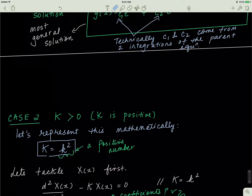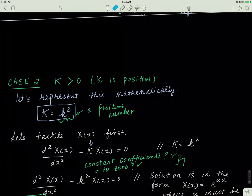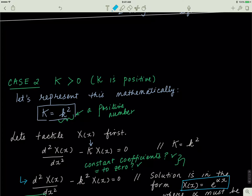I know that capital K is equal to k squared, so I go ahead and substitute that in place of K. Using a different color pen to make this more obvious — if I substitute k squared in place of K, I'm left with this form of the equation. Now ask yourself two questions: does this have constant coefficients? Yes. Is this equal to zero? Yes. So any equation meeting these two criteria has a solution in the form e to the exponent alpha x, where alpha must be determined. Once I know alpha, I know all the solutions, and the most general solution will be a linear combination of those solutions.